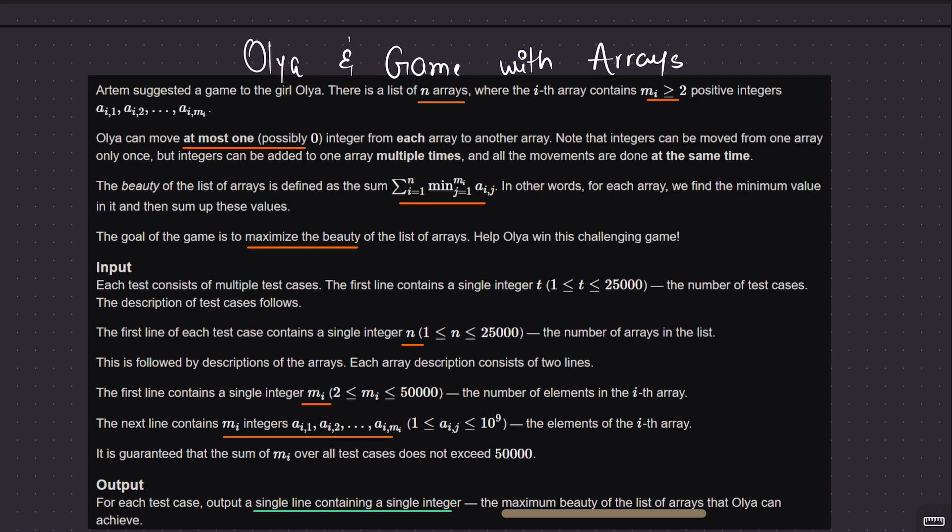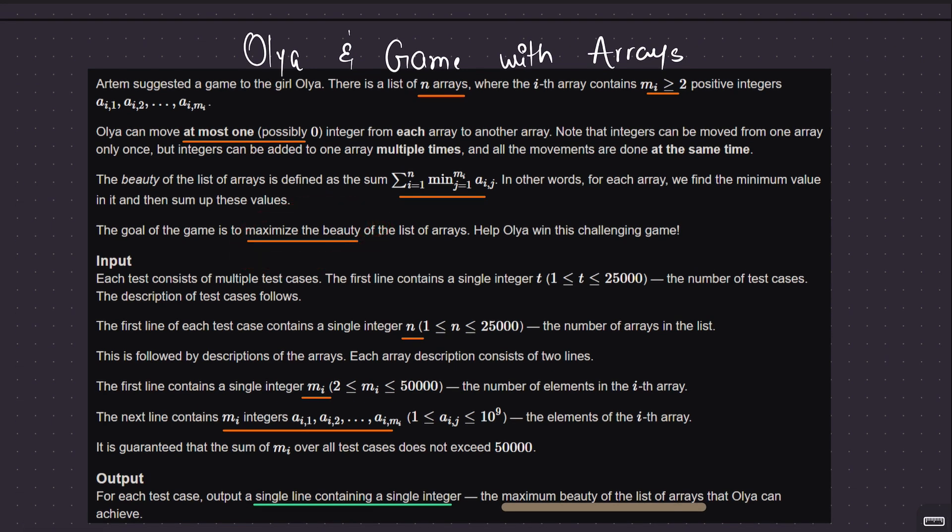What action can we perform? This Artem guy gives this girl Olya a game. She can move at most one integer from each array — an integer can be picked up from an array and moved to some other array, and multiple elements can be added to the same array. They have defined this concept of beauty: just pick the minimum of all the arrays and sum them up. And what we want is to maximize this beauty.